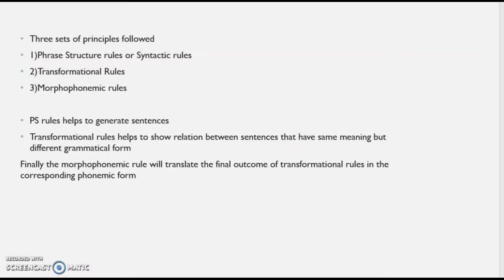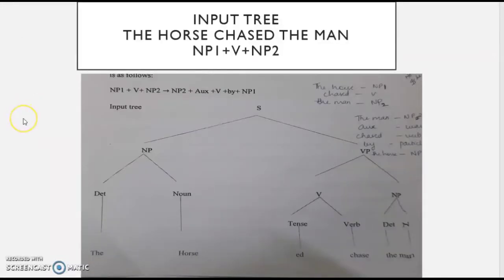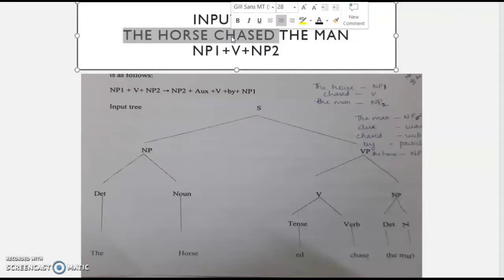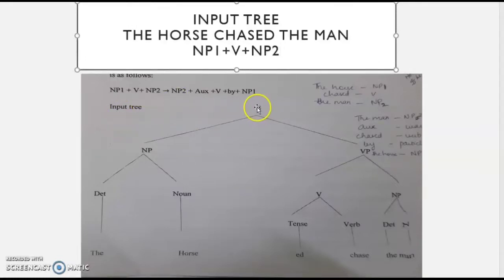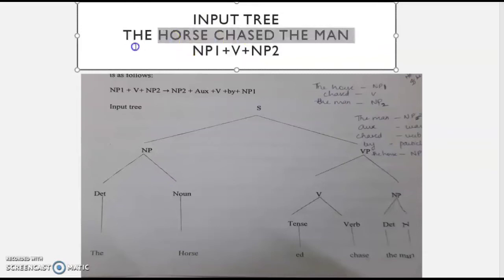Let's look at how these rules are applied on the basis of tree diagrams. The input tree represents what happens in transformational generative grammar. We have generated the sentence 'the horse chased the man.' Noun phrase one is 'the horse,' the verb is 'chased,' and noun phrase two is 'the man.' The sentence is divided into the noun phrase and the verb phrase.